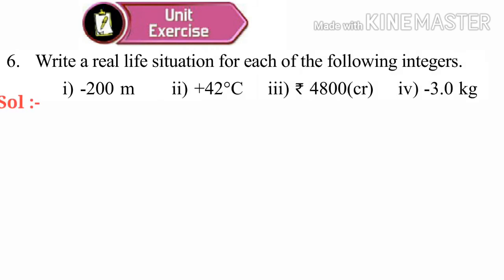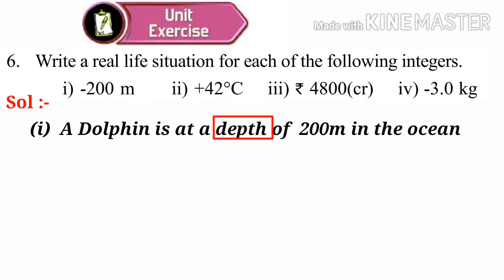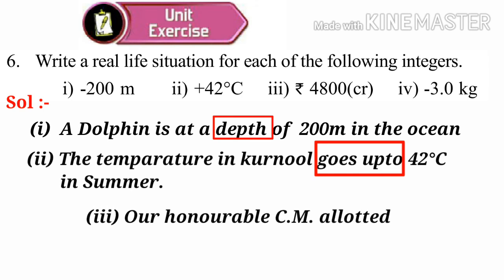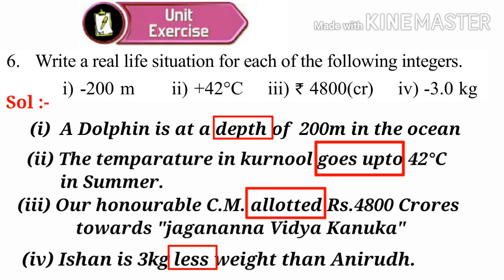Now, sixth problem: write real life situations for each of the following integers. Solution number 1: minus 200 meters — a dolphin is at a depth of 200 meters in the ocean; depth indicates minus. Number 2: plus 42 degrees centigrade — the temperature in Kurnool goes up to 42 degrees centigrade in summer. Number 3: 4800 crores — our honorable CM allotted rupees 4800 crores towards Jagananna Vidya Kanuka. Number 5: minus 3 kilograms — 3 kilograms less weight than Anirudh.